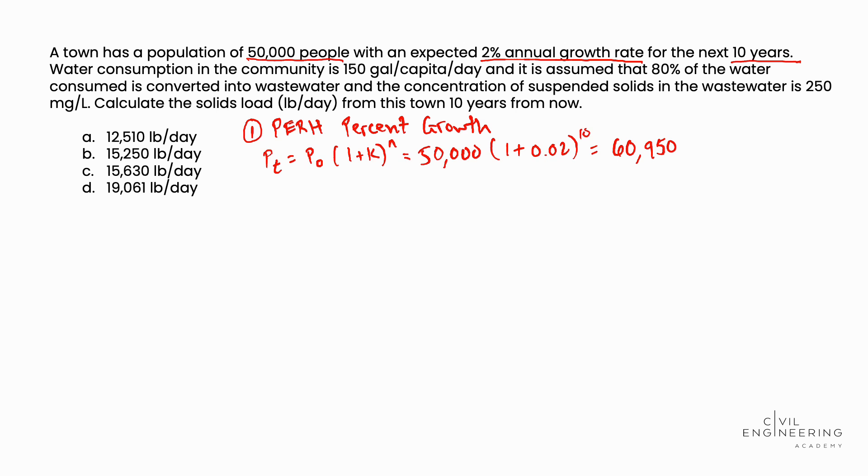So in step 2, we're going to calculate the future water usage. So the water usage in the community 10 years from now. We'll take our future population projection of 60,950 people multiplied by the consumption rate of 150 gallon per capita per day. And that is equal to the future consumption, which is equal to 9,142,500 gallons per day. That would be the consumption rate in the community 10 years from now.